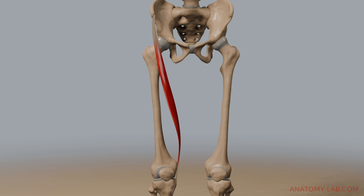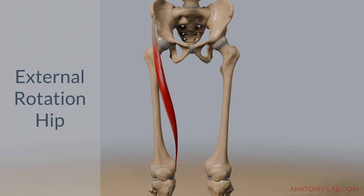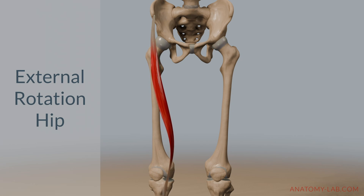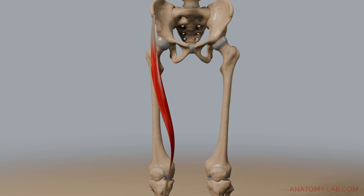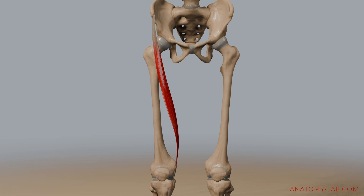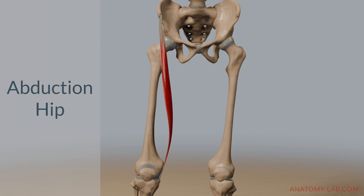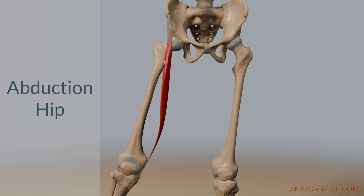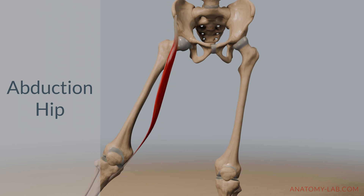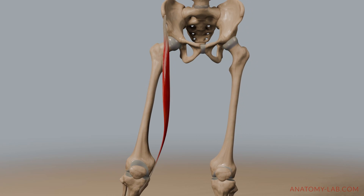As pointed out in the comments, the sartorius is also an external rotator of the hip, meaning it helps rotate the thigh outward and not inward. It also acts as an abductor of the hip, which means it helps move the leg away from the body's midline.